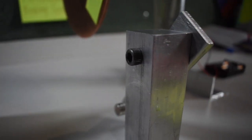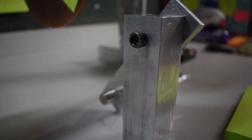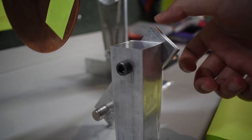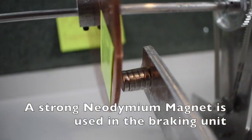The braking unit involves a simple lever system which allows us to adjust the position of the magnet relative to the rotating disc.